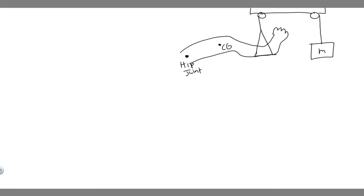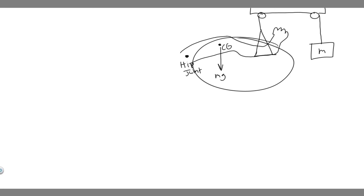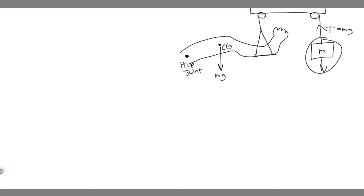This right here is our hip joint. We have the center of gravity, and that center of gravity is going to have a force acting on it — the force due to gravity, mg. The first thing you want to do is label the forces acting on your diagram — draw a free body diagram. We have mg as the force due to gravity, and then we have a tension force holding the wire up. That tension is equal to mg because the system doesn't move, and this tension is what holds the leg up.